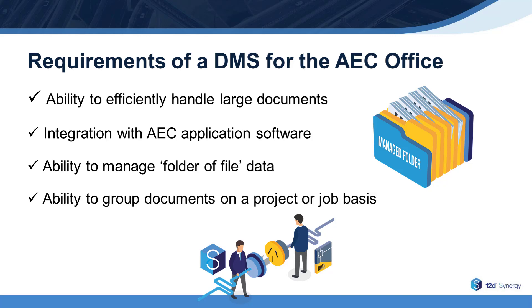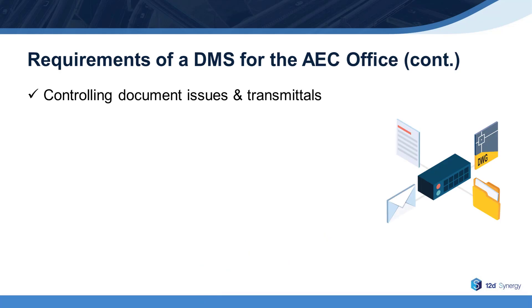The ability to group documents on a project or job basis: the typical AEC office manages work on a project or job basis, so the DMS should also be able to classify and group documents in the same logical categorization. Controlling document issues and transmittals — the issuing of documents in an AEC office is a managed process because the publication of documents has legal and financial implications. There should be a register of who issued the documents, which version was issued, who received them, and why and when.